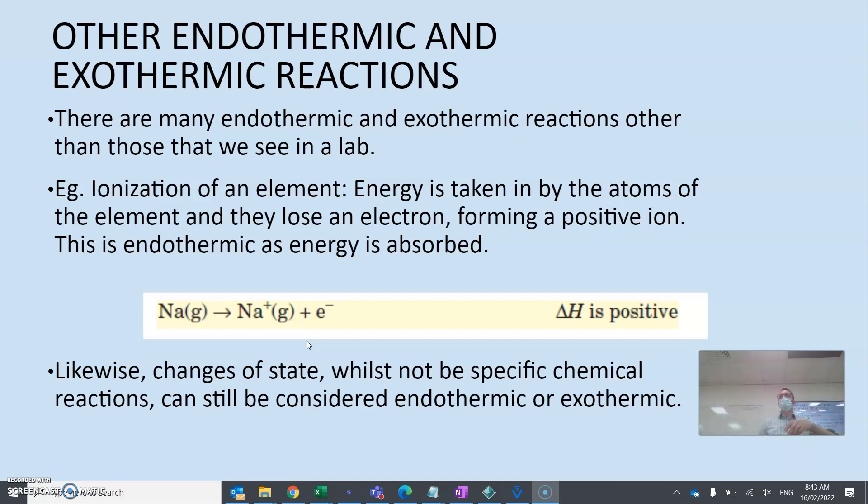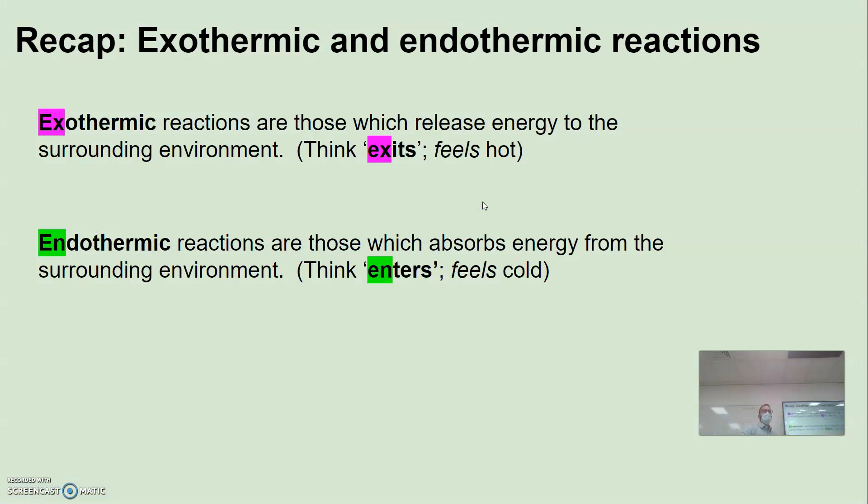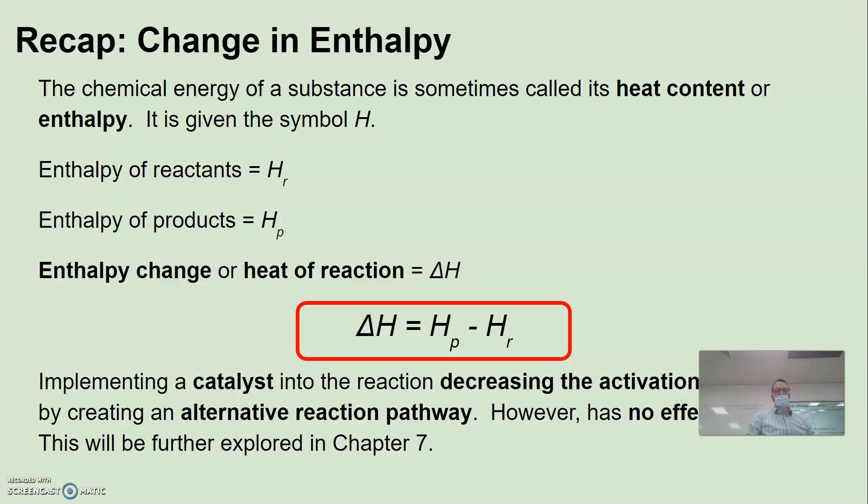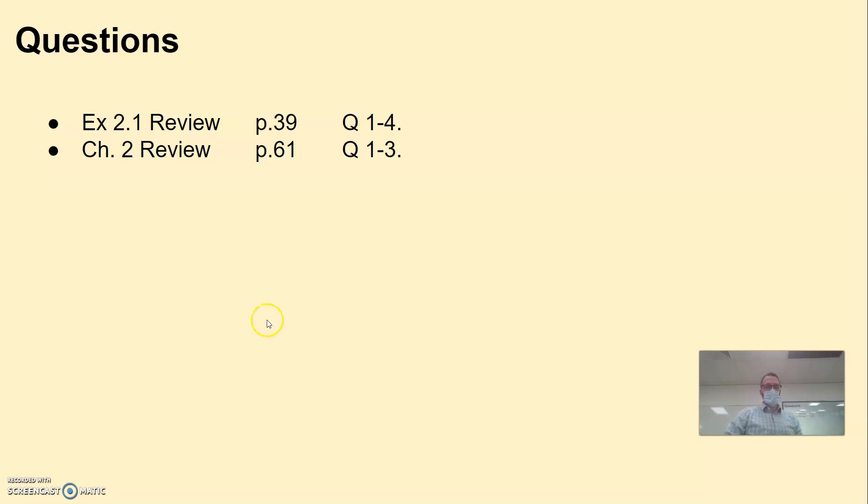If we consider ionization energy, we're providing energy into the system in order to strip away an electron. So ionization energy is an endothermic process. Changes of state: exothermic when we're cooling something, so when we're going from gas to liquid to solid, that's exothermic. When we're going from solid to liquid to gas, endothermic. It's absorbing energy in order to break the bonds between the particles. So, quick recap. Exothermic, I want to think exit, so it feels hot. The energy is going from the system to the surroundings. Endothermic, think enter. It feels cold because it takes energy from the surroundings to the system.